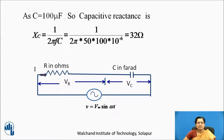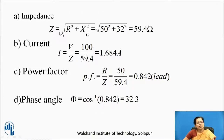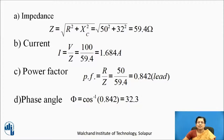Resistance and capacitance are both connected in series and V equals Vm sin omega t is the applied voltage. So let us calculate the impedance first: Z equals under root of R squared plus Xc squared, equals under root of 50 squared plus 32 squared, equals 59.4 ohm. For current: I equals V by Z equals 100 by 59.4 equals 1.684 ampere. Power factor equals R by Z equals 50 by 59.4 equals 0.842 leading.